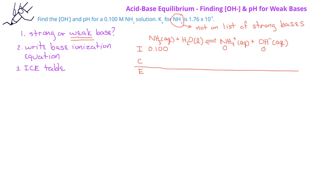Since we're given the value of the base ionization constant, we know we'll have to use x in the change row. The ammonia changes by negative x, whereas the ammonium and the hydroxide ion each increase by x. We can assume that x is going to be much less than 0.1, since the value of the base ionization constant is very small — less than 1 times 10 to the minus 4. Therefore, the equilibrium concentration of ammonia is 0.100, and the equilibrium concentrations of ammonium and hydroxide are both x.